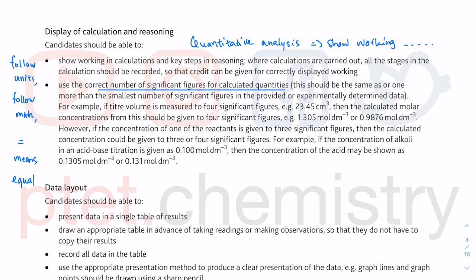Use the correct number of significant figures for calculated quantities. This should be the same as, or one more than, the smallest number of significant figures in the provided experimentally determined data. Look at the data given and base your significant figures on that.